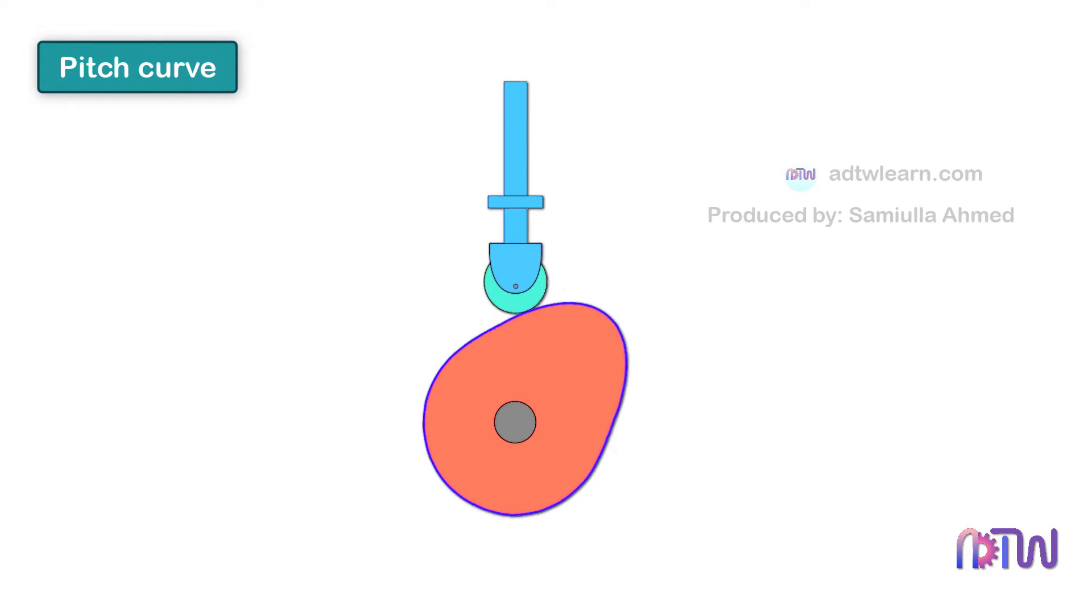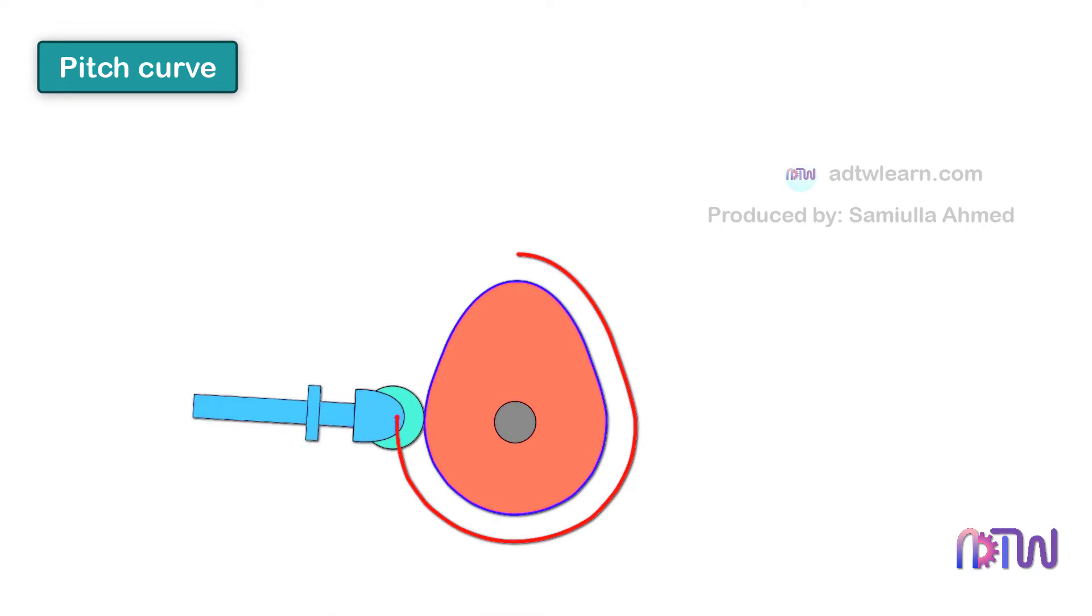Pitch Curve: It is the curve drawn by the Trace Point, assuming that the cam is fixed and the Trace Point of the follower rotates around the cam in a clockwise direction. This curve is the Pitch Curve.